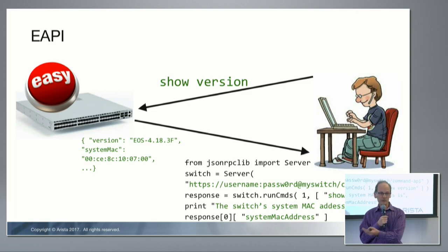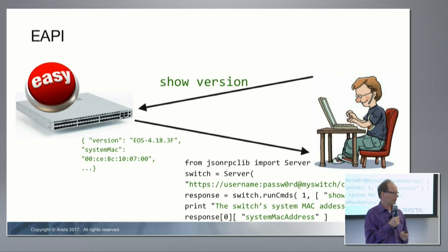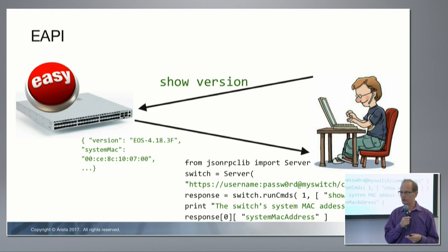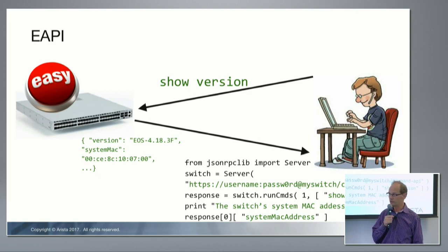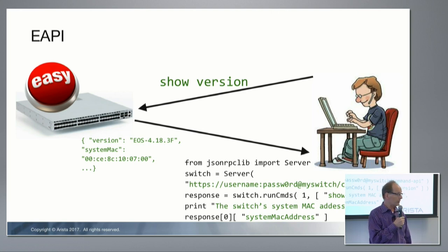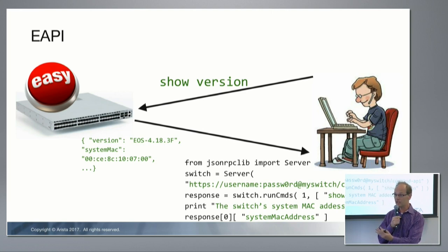If you want to use eAPI to extract all of the LLDP neighbors of the box, you don't have to dig through page 937 of some XML guide. If you're using eAPI, you already know the command: show LLDP neighbor.